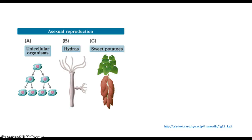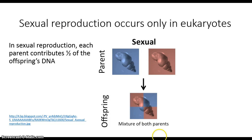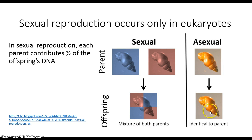Just to recap: asexual reproduction is the process whereby a number of different types of organisms produce exact copies of themselves, whereas in sexual reproduction you have two different organisms combine half of their DNA each to produce the cells of the next generation. In sexual reproduction you have a combination of the two parents' genetics being incorporated into the offspring, in contrast with asexual reproduction where the offspring are identical to the parents. This kind of reproduction occurs only in eukaryotes.